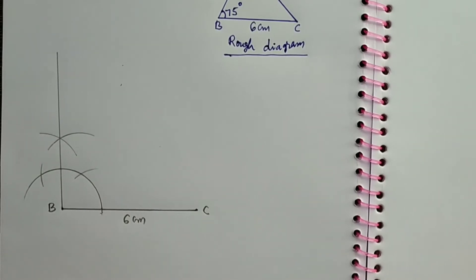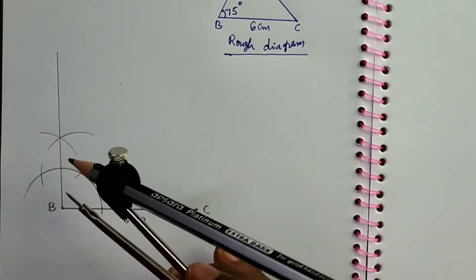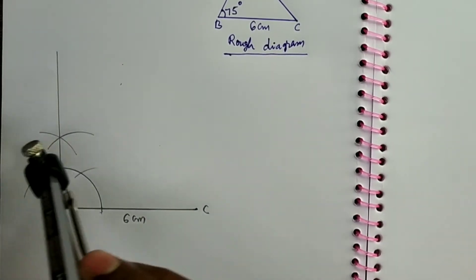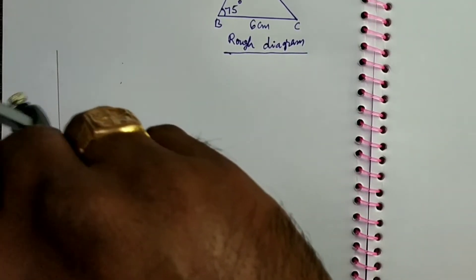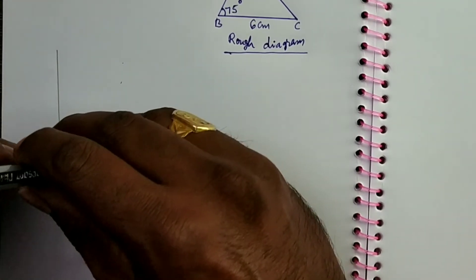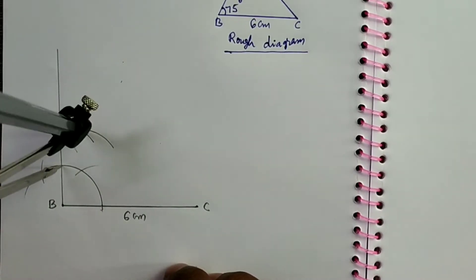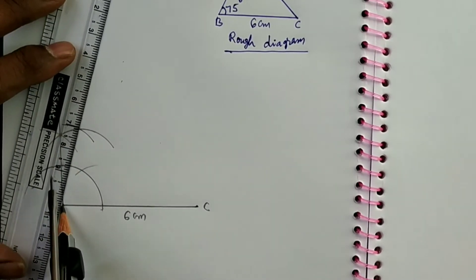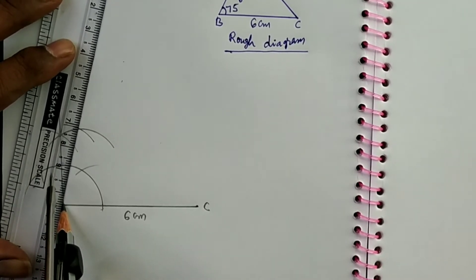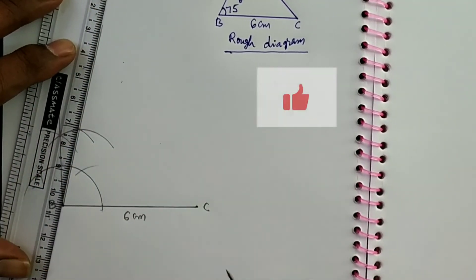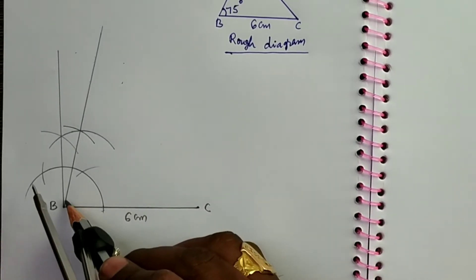This represents 90 degrees. Now, 75 degrees lies between 60 degrees and 90 degrees. So from the 60 degrees mark draw an arc, and from the 90 degrees mark draw another arc. From B, through the point of intersection of these two arcs, draw a ray.